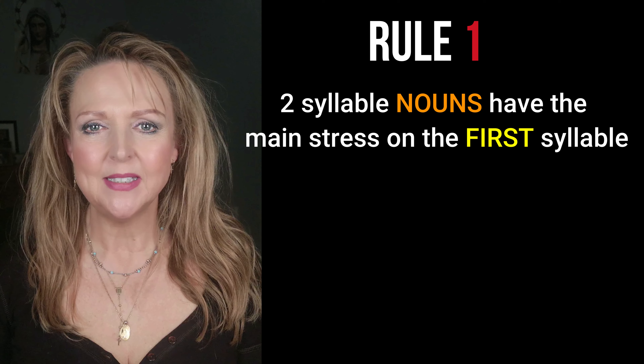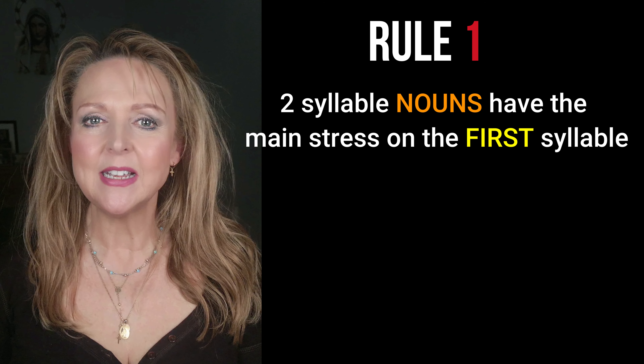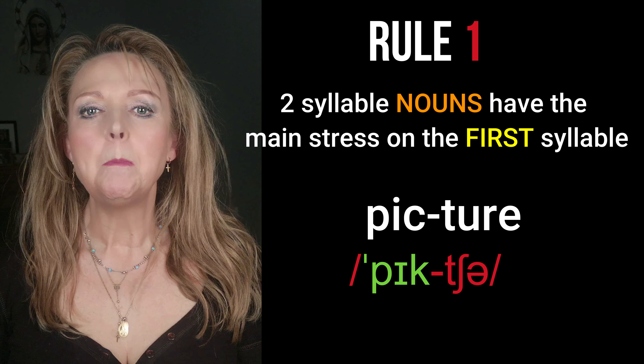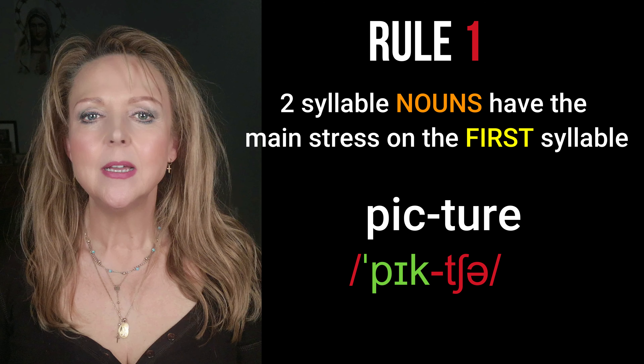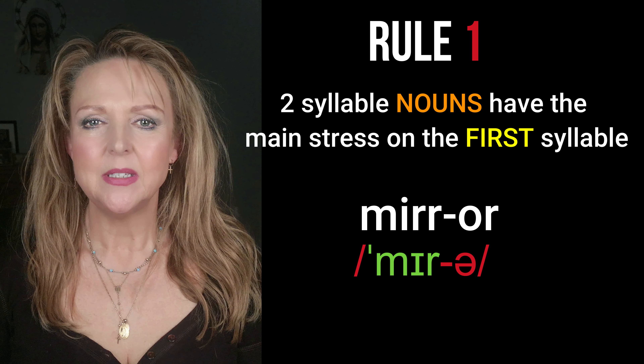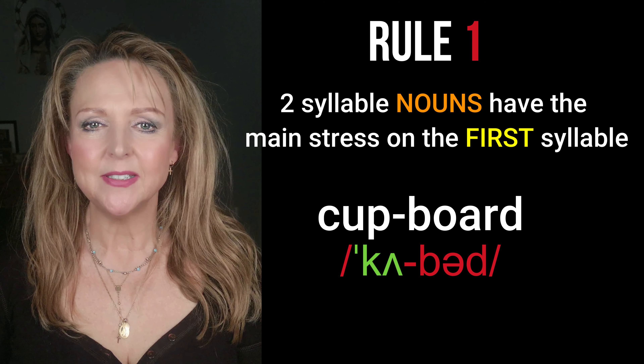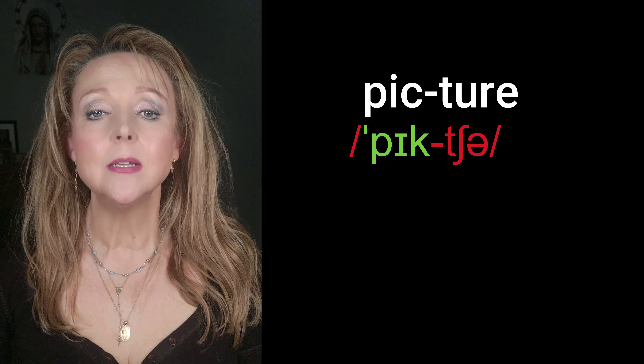Rule number one: two-syllable nouns have the main stress on the first syllable. Picture, mirror, bottle, cupboard. We don't stress both vowel sounds — we make the first syllable strong and the second weak, like this: 'picture', 'mirror'.